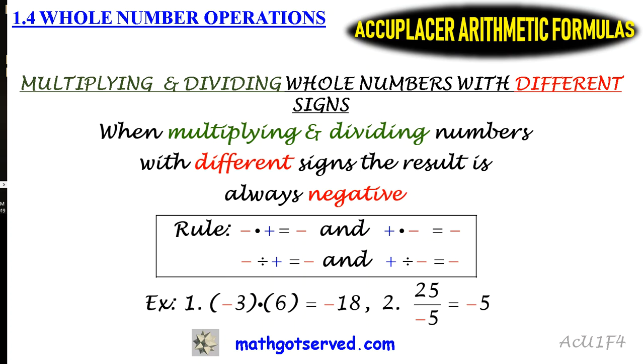When multiplying and dividing numbers with different signs, the result is always negative. In the previous presentation, formula 1.3, we found that when you're multiplying and dividing numbers with the same sign, the result is positive. But when the signs are different, the result is always negative.